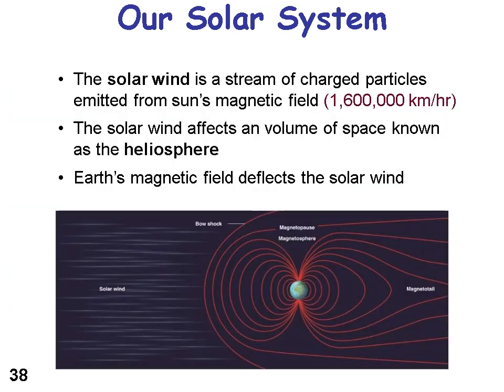Solar wind is a stream of charged particles emitted from the sun's magnetic field. The solar wind affects the volume of space known as the heliosphere. Praise God, we have a magnetic field that deflects that solar wind so that we don't feel those effects — our magnetic field keeps it from significantly affecting the Earth.